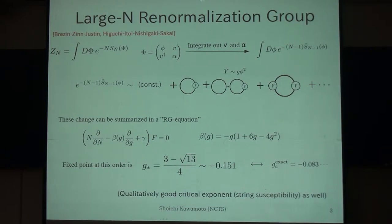This minus 0.151, numerically. So it's not exactly, the exact value is minus 0.083, so it's qualitatively not that bad. So they proposed this method to consider the critical behavior of the matrix model in which the exact computation is too difficult.